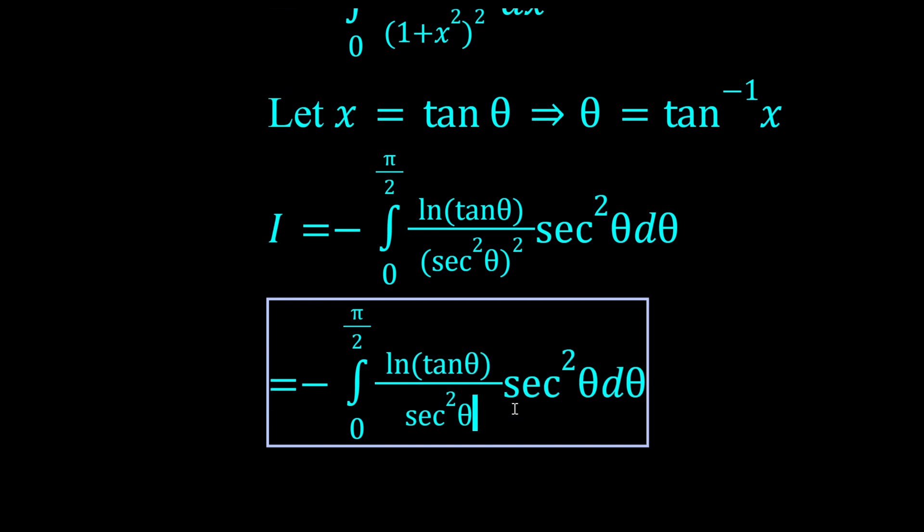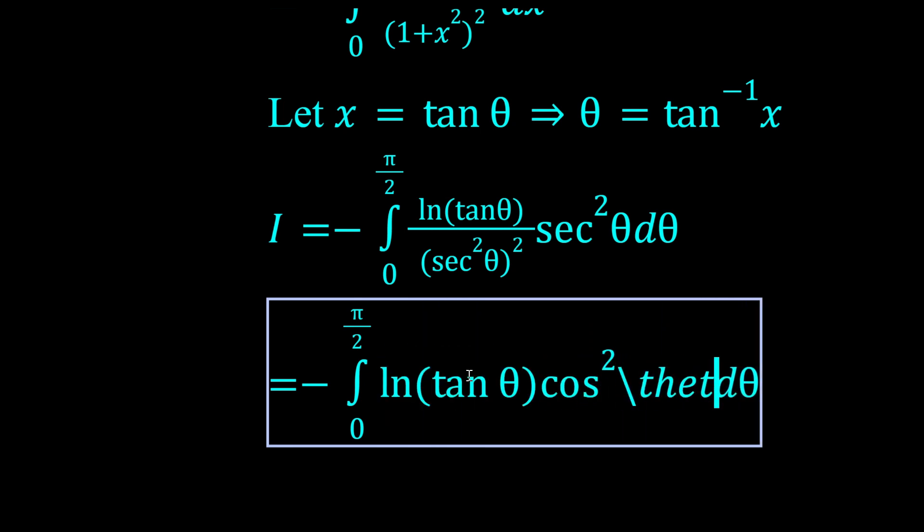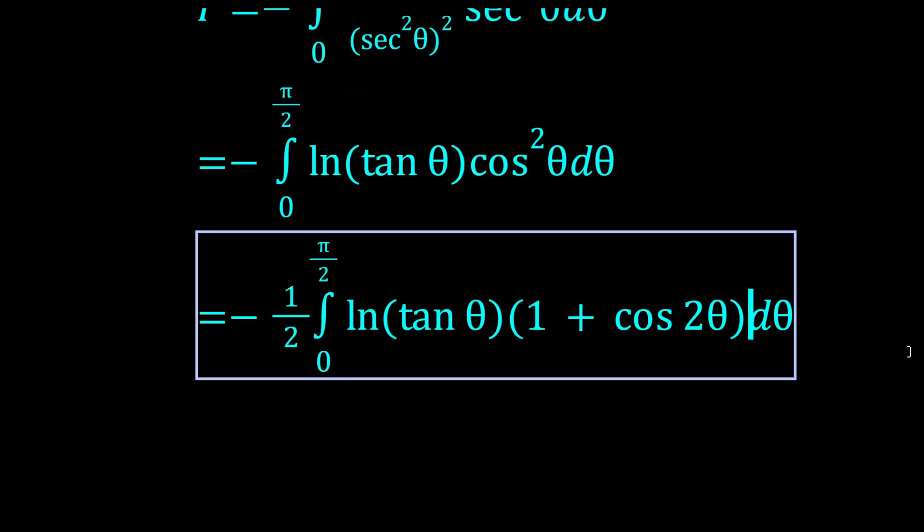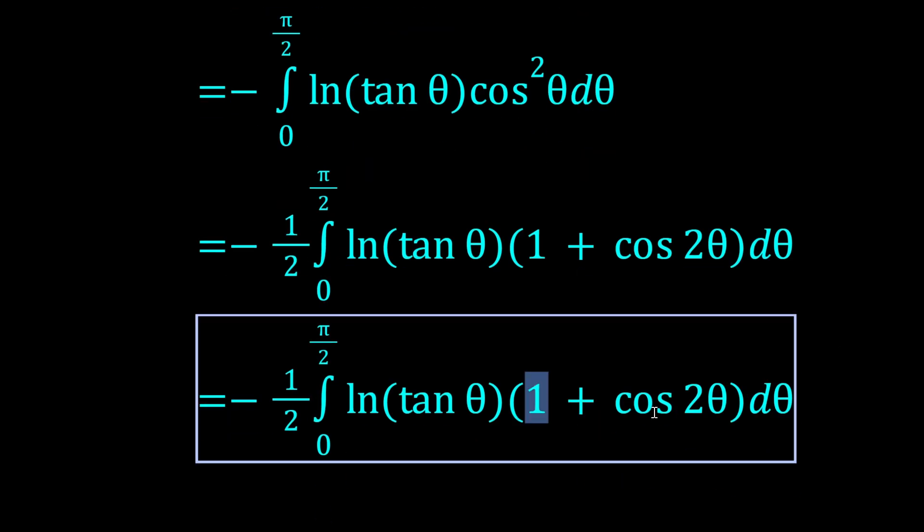Now what? Well, we can rewrite it and cancel some stuff. We're just going to get log(tan) times cos². Right, so what do we do now? Well, cos² is not that good. We could write it in a much better form.